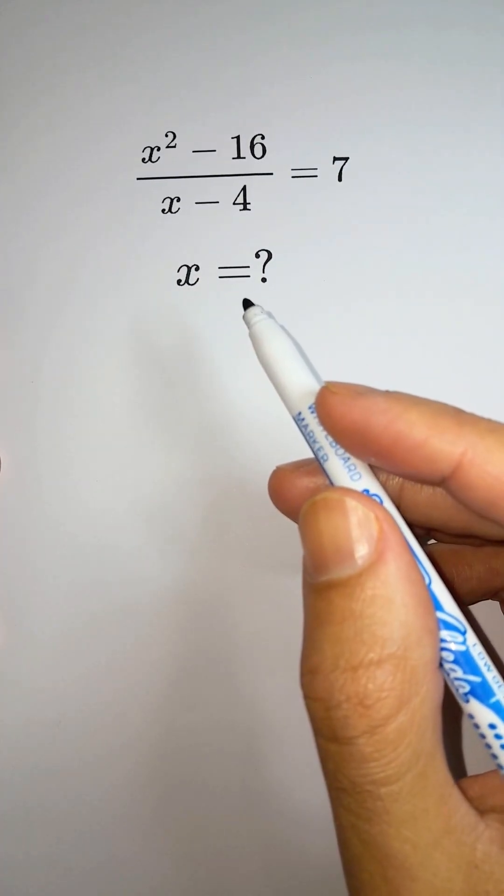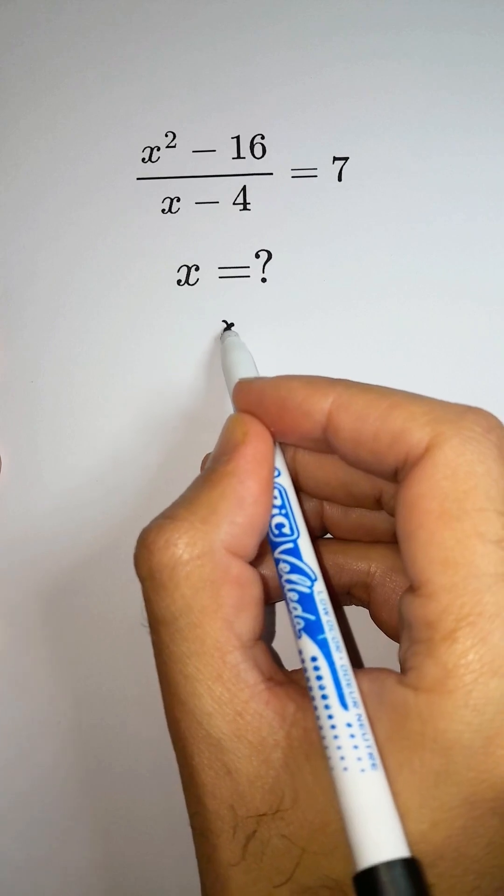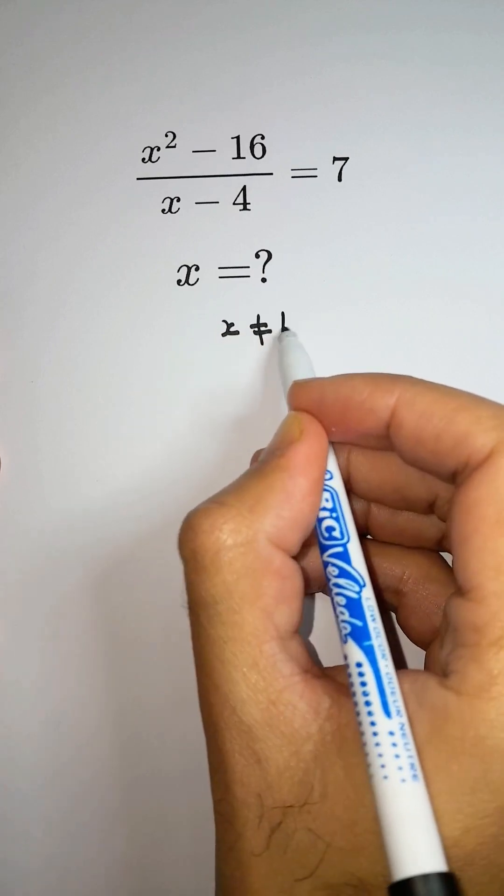Let's uncover the secret behind this tricky fraction. x squared minus 16 divided by x minus 4 equals 7.